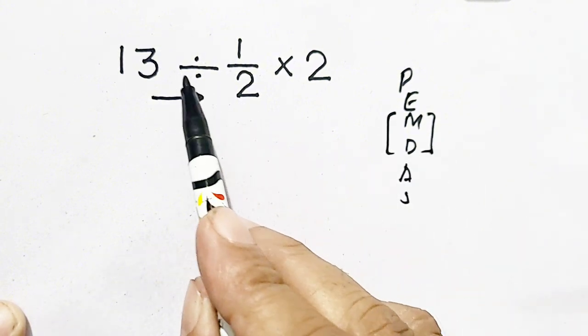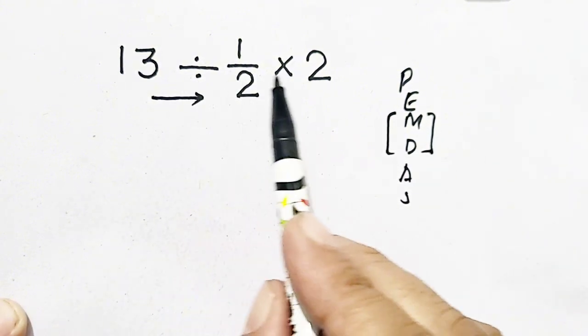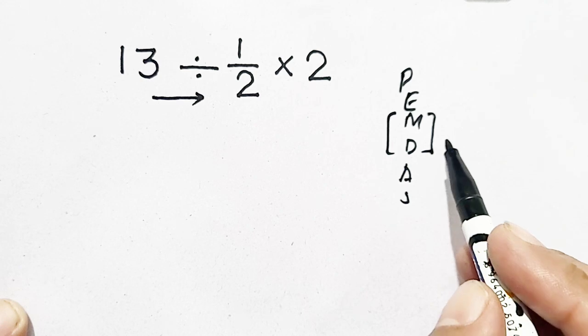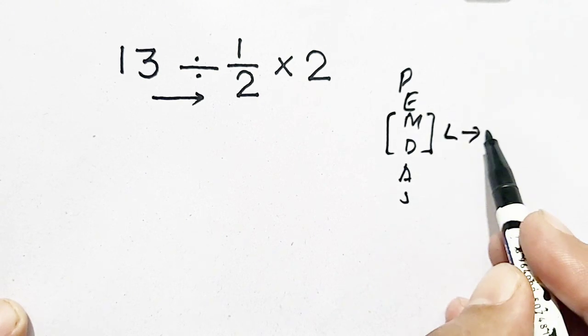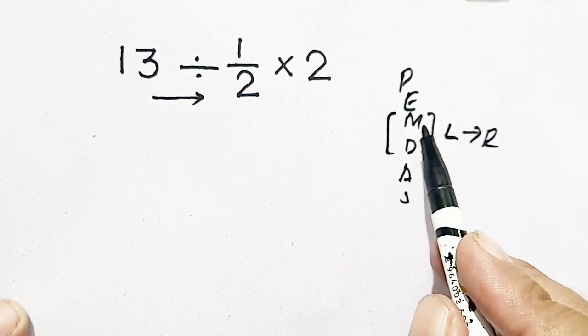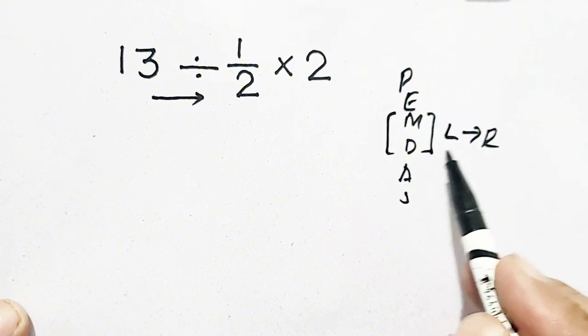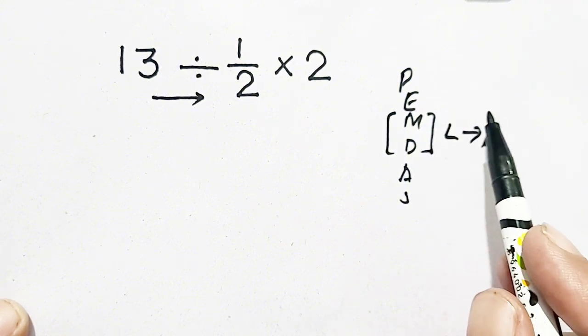If multiplication and division appear together, as in this case, we have to move from left to right. The function which is on the left will be performed first.